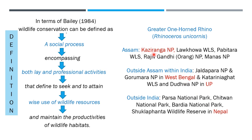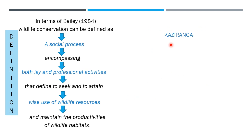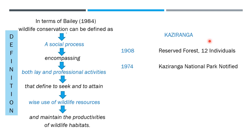Kaziranga was declared as a reserve forest in 1908. Interestingly, at that time only 12 rhinos were left. Kaziranga was declared a National Park in 1974. According to the 2018 census, today we have 2,413 rhinos in Kaziranga National Park. This is 110 years of conservation history. We do not find such success of in-situ conservation of a particular animal anywhere else in the world — from 12 rhinos to 2,413 rhinos in Kaziranga National Park alone.